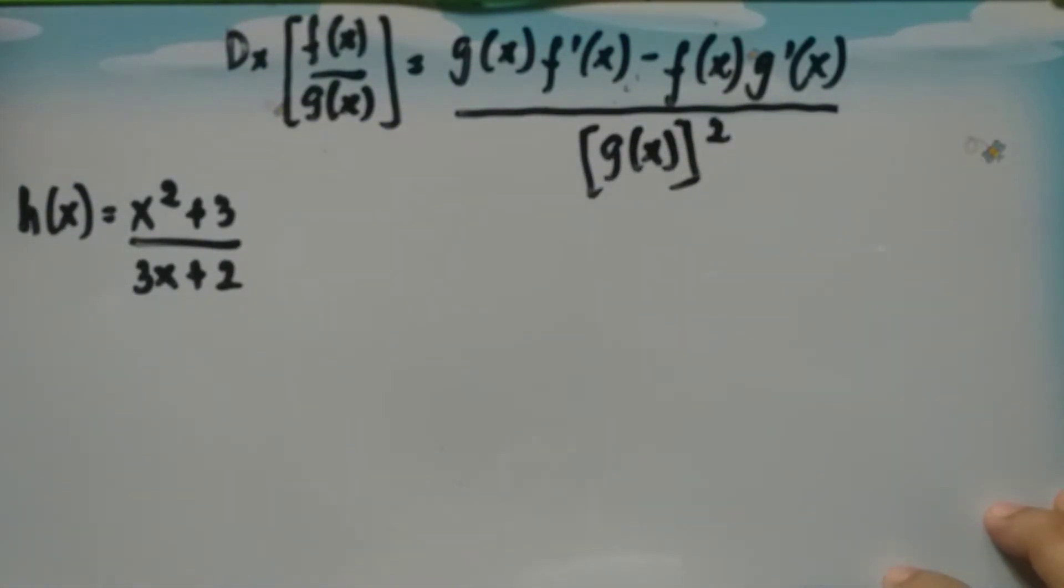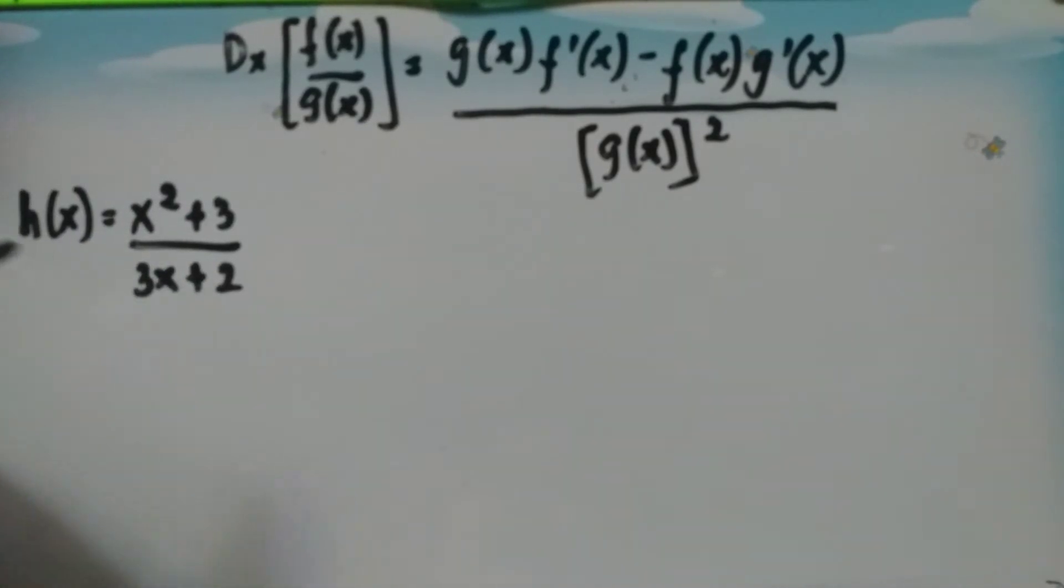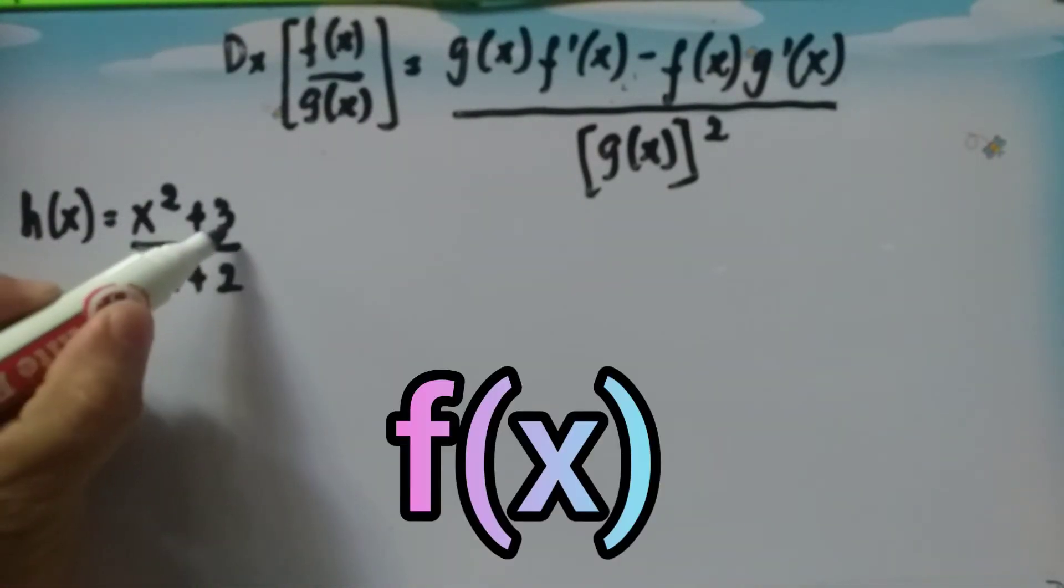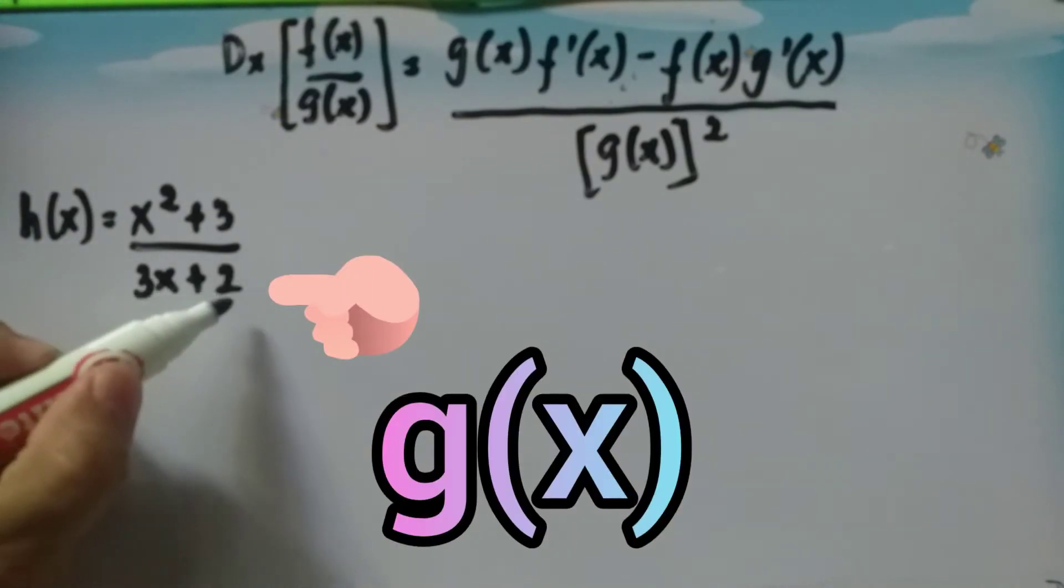Let's have an example. Say we have h of x equals x squared plus 3 divided by 3x plus 2. Here, x squared plus 3 is our f of x, and 3x plus 2 is our g of x.